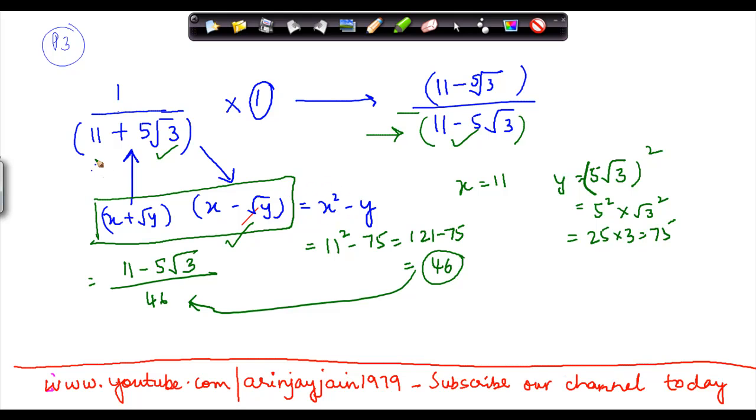You can straight away do a multiplication of this number with this number and reach a solution. The idea is you have to get the square of this number or any number which is there in an under root scenario. Because by doing that, you will be able to remove the square root. That's how you do the rationalization of the denominator.